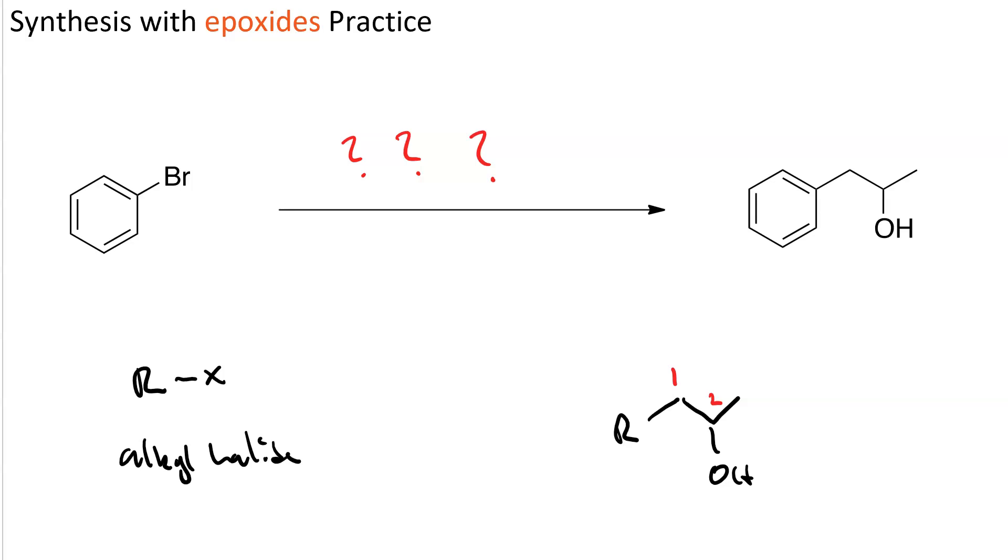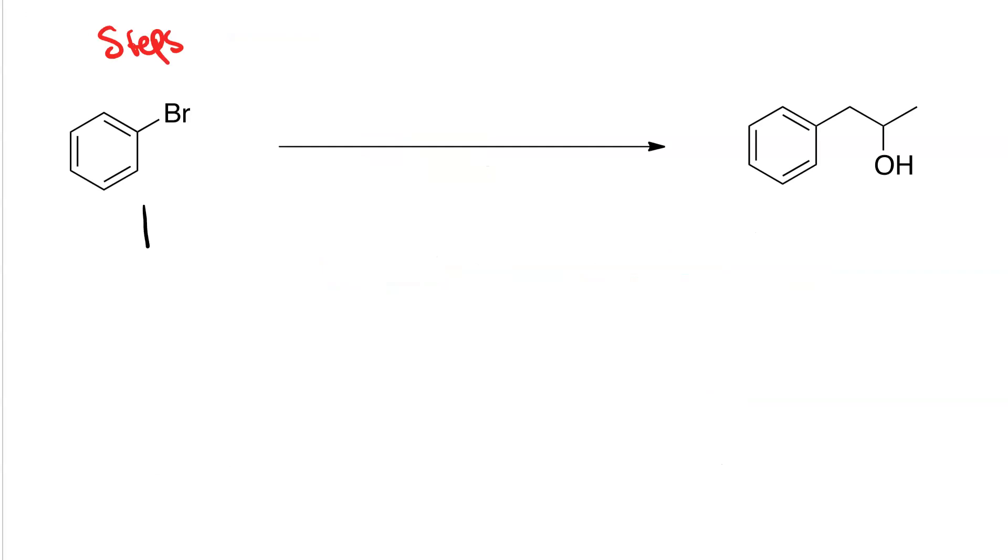Clearly, we're going to use a Grignard synthesis, and our electrophile will be an epoxide. Specifically, it'll be 2-methyloxorane. Let's go through the steps. First, we need to form a Grignard reagent, and we'll use magnesium in diethyl ether to do that, using the alkyl halide as our substrate.